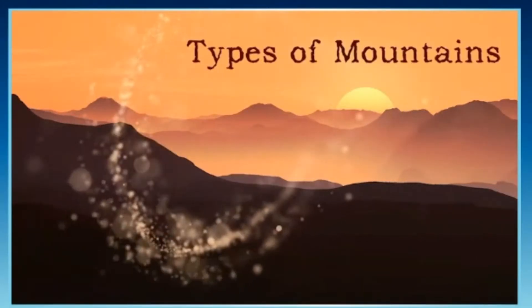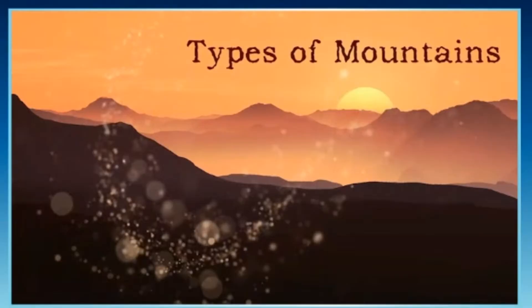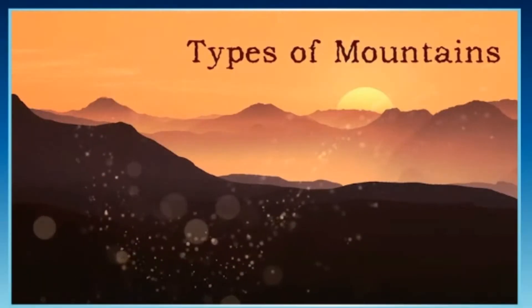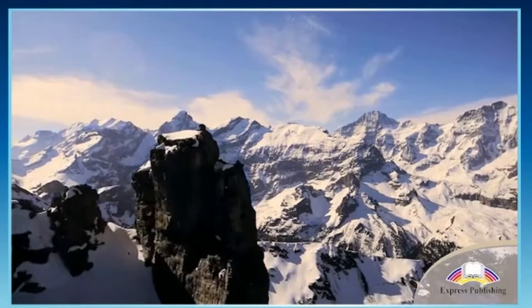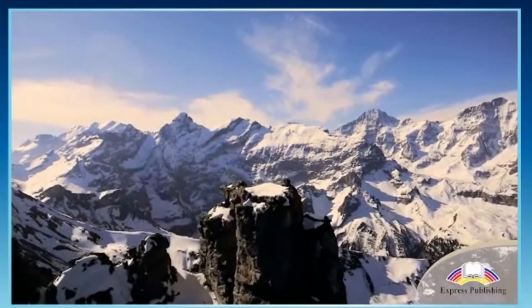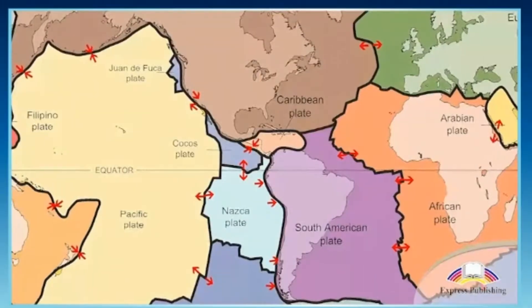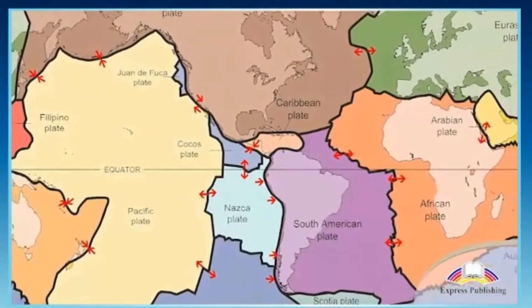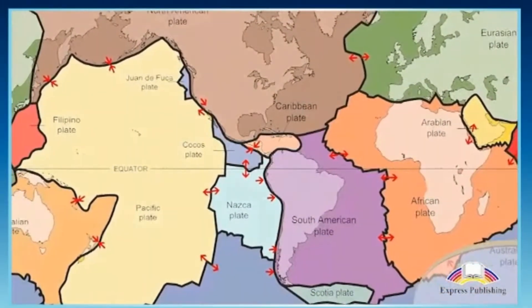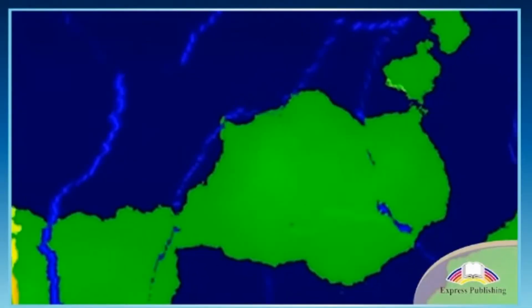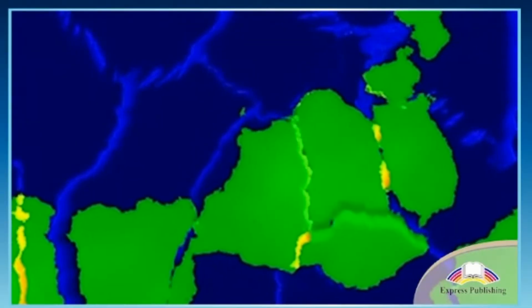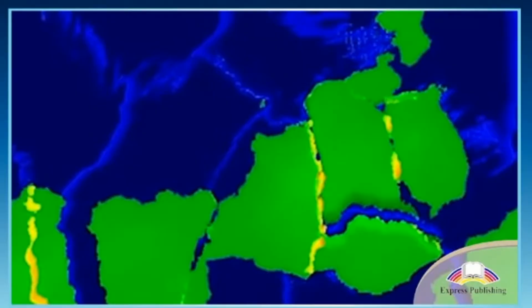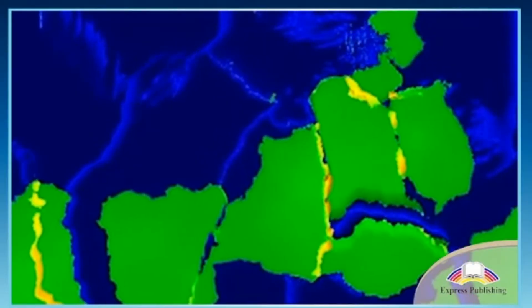Types of Mountains. Have you ever wondered how mountains are formed? The Earth's crust is made up of over 50 tectonic plates that push and pull to form mountains. But this happens so slowly that we don't even notice it.